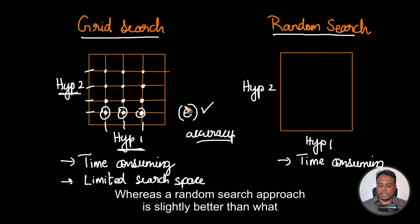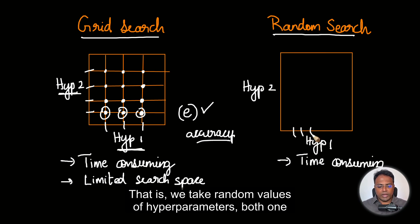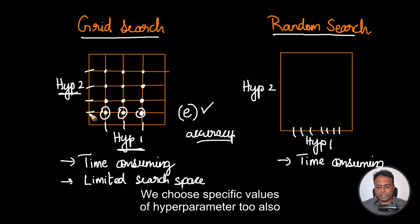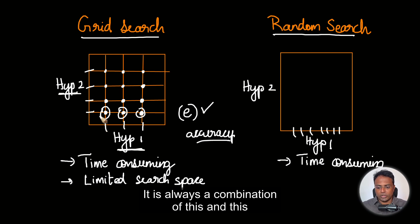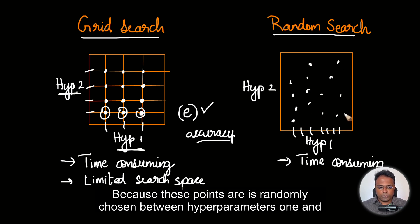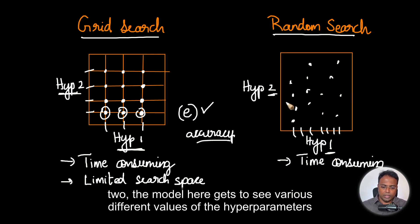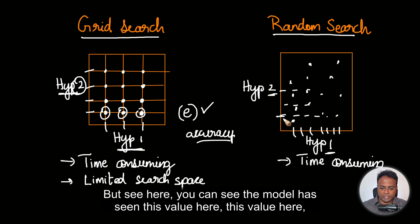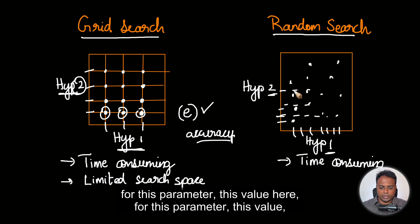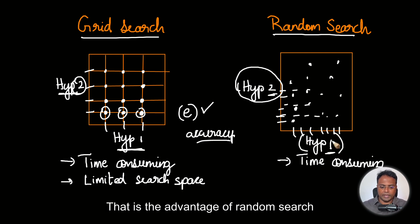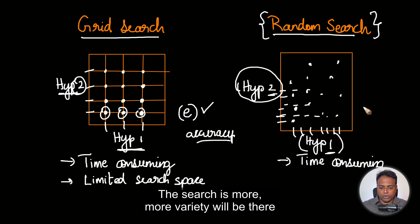Random search is slightly better than grid search — we take random values of hyperparameters 1 and 2, randomly we pick. In grid search, values are equally spaced or discrete. In random search, since we are randomly picking, these points can be anywhere and may not be in a grid. Because these points are randomly chosen, the model gets to see various different values of the hyperparameters. For example, hyperparameter 2 might only have 4 unique values in grid search, whereas in random search the model has seen many more different values for both parameters. That is the advantage of random search — more variety will be there.